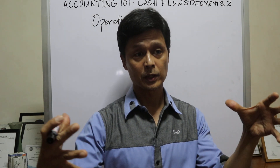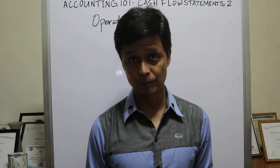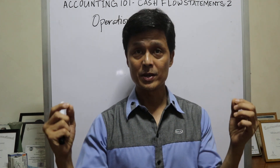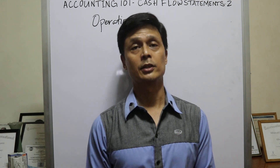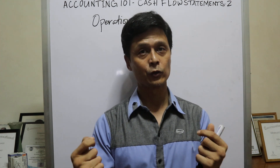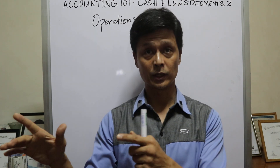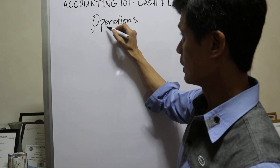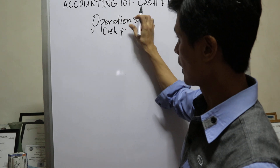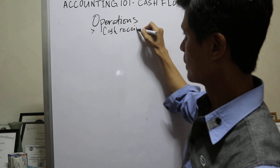This is where the company earns its bread and butter — ito yung pinaka-main na pinagkakatipaan nila through their operations of a business. Just like in my example last time, we talked about a grocery. Doon sa grocery na yun, ano yung pinaka-activity doon? Yung magbenta ng goods. So ito yung pera na pumapasok doon sa grocery, which is their main operations — yung tinatawag na cash payments or cash received from its customers.